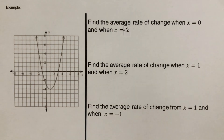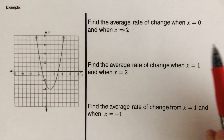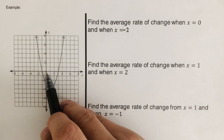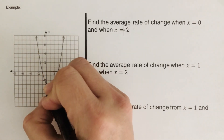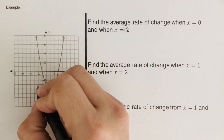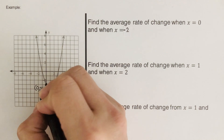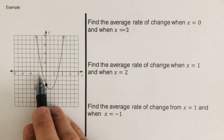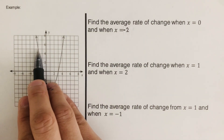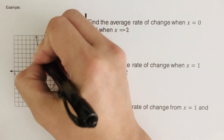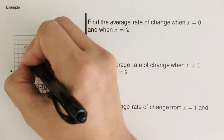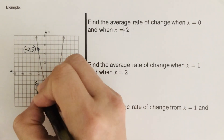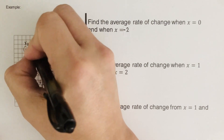In this second example, we are given a graph. We are supposed to determine the average rate of change between two points. When x is equal to 0, the coordinate is 0 and negative 3. When x is negative 2, the point is all the way up to 5, so that coordinate is negative 2 and 5. We label these as x sub 1, y sub 1, x sub 2, y sub 2.